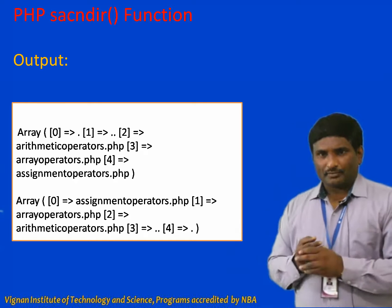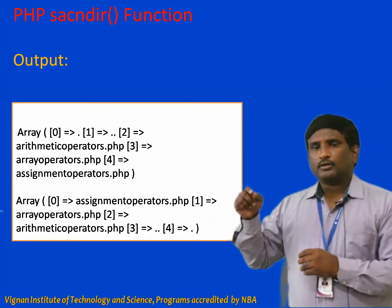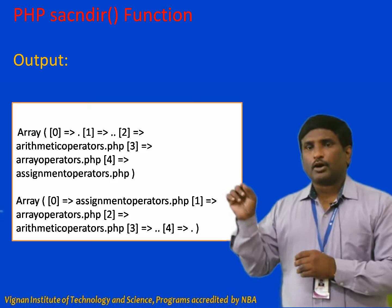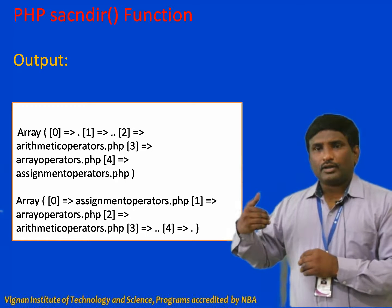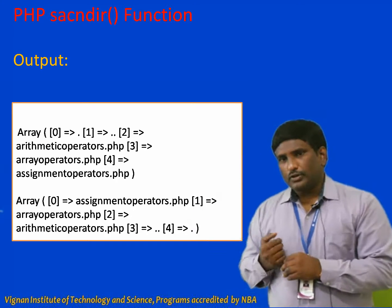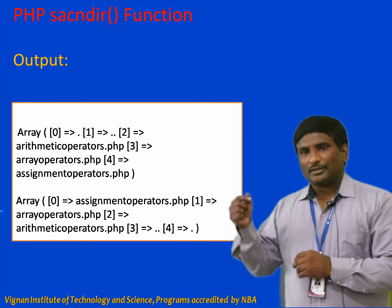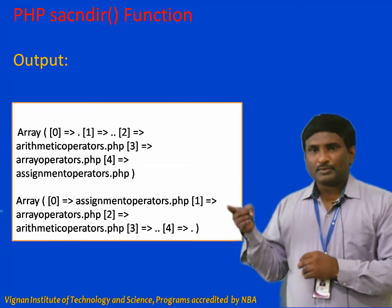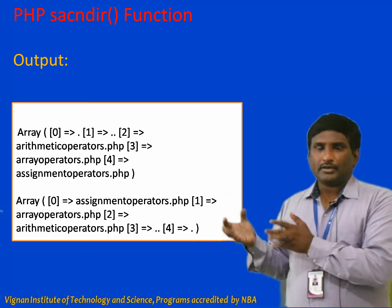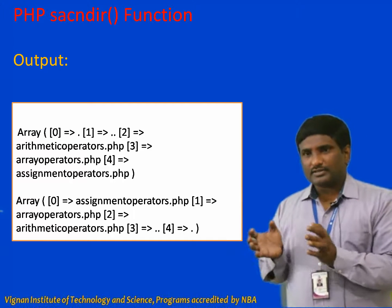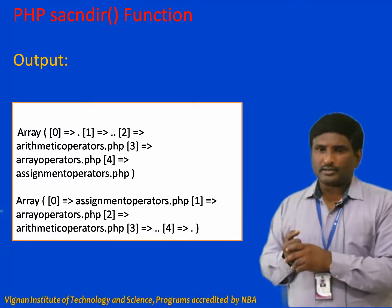The output of scandir() is an indexed array: index 0 points to '.', index 1 points to '..', index 2 points to arithmetic_operator.php, index 3 points to array_operator.php — this is in ascending alphabetical order. For descending order, specifying 1 reverses the order. So we have discussed all the PHP directory functions and what operations we can perform on directories. Thank you.